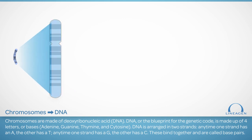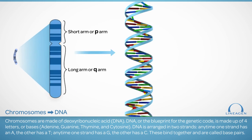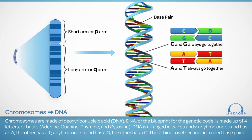Chromosomes are made up of deoxyribonucleic acid, or DNA. DNA, which is thought of as the blueprint for the genetic code, is made up of four letters: A for adenine, G for guanine, T for thymine, and C for cytosine. These are also called bases, or nucleotides, and are the chemical components that make up DNA. DNA naturally occurs in a twisted ladder shape called a double helix, as shown here.